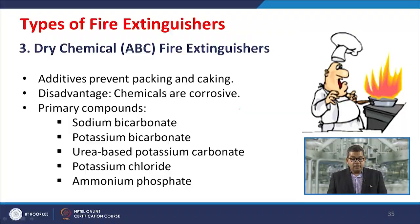In this module, we have studied three different types of fire extinguishers. Before studying these extinguishers, we classified fire. Based on this classification, we went through three different types of fire extinguishers: APW, dry chemical, and CO2. In the subsequent module, we will cover other types of fire extinguishers along with the methodology, anatomy, and how to use those extinguishers. Thank you very much.